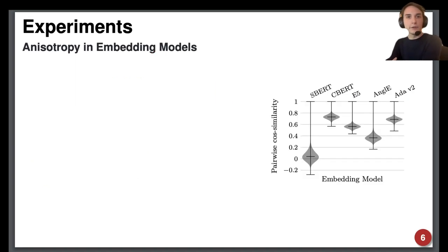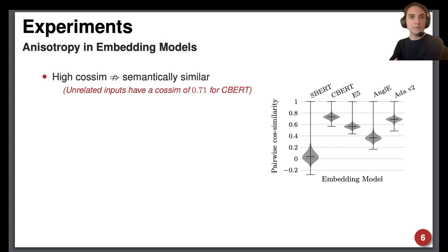We often think that the embeddings of two unrelated texts should have a cosine similarity of zero since this should mean that they are not similar at all, however in the graphic we can see the distributions of cosine similarity for all pairs of queries in the dataset. Only for Sentence-BERT is the expected cosine similarity even close to zero. This shows that a high cosine similarity does not necessarily indicate high semantic similarity. A cosine similarity of 0.71 is quite high but indicates unrelated semantics for CharacterBERT.